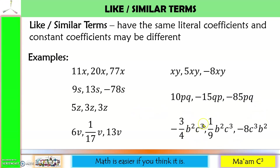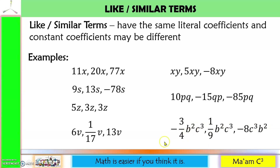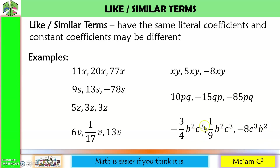B squared C cubed, B squared C cubed, C cubed B squared. Let us analyze: the exponent of B is 2 in all terms — correct. For C, the exponent should be 3 — here is 3, and here is also 3. So these three terms are similar terms.